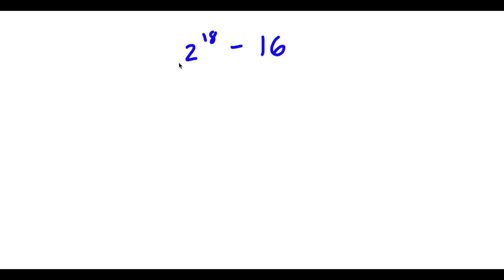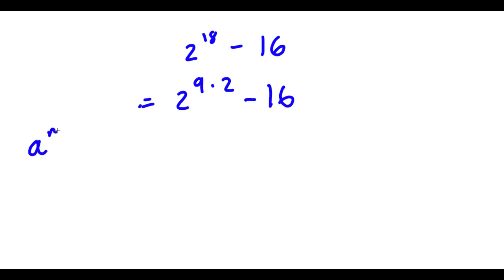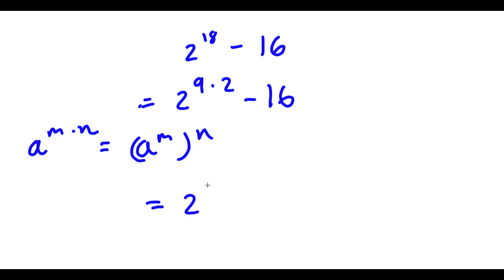So we have 2 to the power of 18 minus 16. Now, 18 is the same thing as 9 times 2. So I have 2 to the power of 9 times 2 minus 16. If I have something in the form a to the power of m times n, this is the same thing as a to the power of m to the power of n. So 2 to the power of 9 times 2 is going to equal 2 to the power of 9, to the power of 2.